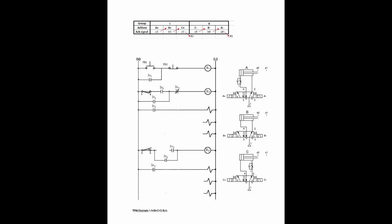Let us now draw the corresponding arrow to show the signal-designated action. A1 triggers B plus. B1 triggers C plus. C1 triggers R2. C0 triggers B minus. B0 triggers A minus. A0 triggers R1.